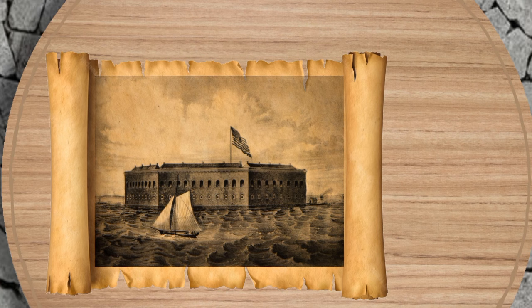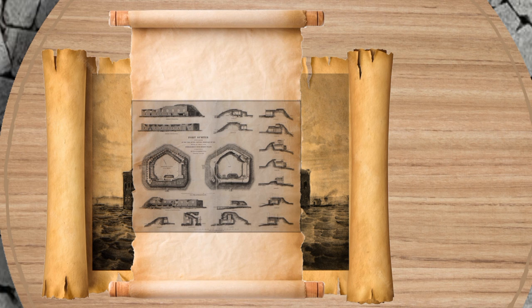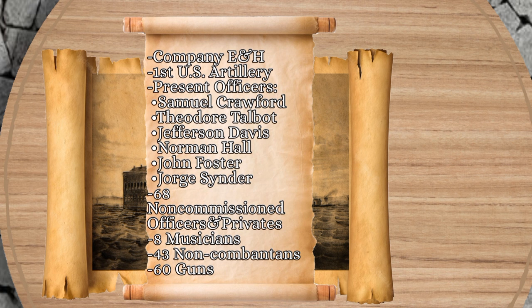Conditions at the fort were difficult during the winter of 1860–1861; rations were short and fuel for heat was limited. Fort Sumter was designed to mount 135 guns operated by 650 officers and men, but construction delays and budget cuts had left it only about 90 percent finished. In early 1861, Anderson's garrison consisted of just 85 men, primarily two small artillery companies: Company E, First U.S. Artillery, commanded by Captain Abner Doubleday, and Company H, commanded by Captain Truman Seymour.